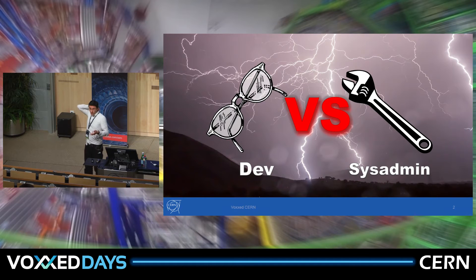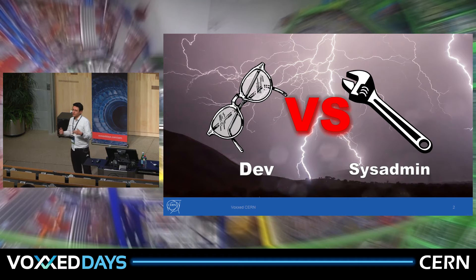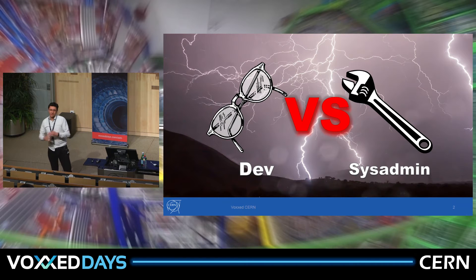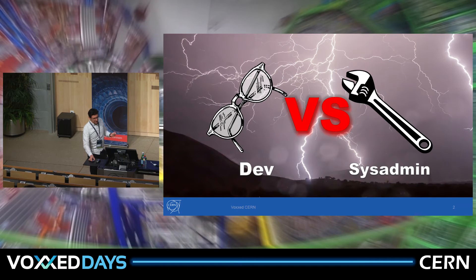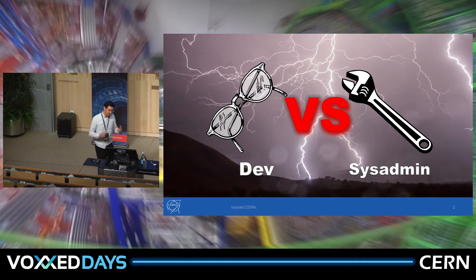At CERN, we do cutting-edge science, but we can't always do cutting-edge everything. We've got to be conservative. If the LHC is up and running for a year or 18 months at a time, we just can't restart and redeploy things the way we feel like it. We've got to stay within some reasonable boundaries. There weren't many options to reconcile these two problems, but with a technology like Docker, you have an option.